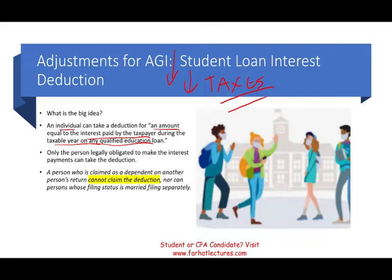Once you're no longer a dependent — for example, my cousin Laureen — when she was in school she was legally responsible for the loans but was being claimed by my aunt and uncle, so they were taking the interest loan deduction. Once she's no longer a dependent and filing on her own, she can take it. Also, a person who files married filing separately cannot take this deduction. The government simply will not allow it.